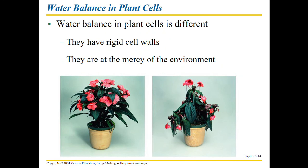The kangaroo rat lives in a dry environment and can't lose too much water, so it holds onto whatever water it gets from food and produces very concentrated urine. Plant cells have rigid walls, so water balance is a bit different. Plants are at the mercy of their environment — if there's low water they'll wilt — but different structures like CAM and C4 help control for water loss.